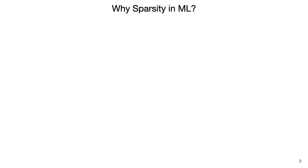We're all on board with machine learning being quite important, but why do we need sparsity in machine learning? There are basically two places where sparsity comes from. One is that we try to increase the efficiency of the neural network by introducing sparsity into it. The other is that we want to train and infer on sparse data.